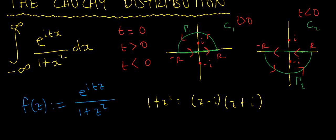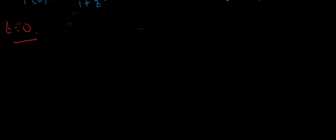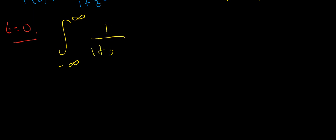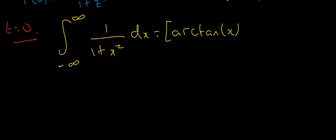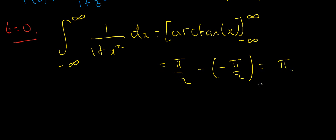When t equals 0, the integral becomes the integral from minus infinity to infinity of 1 divided by 1 plus x squared. That's our familiar arctan integral. Letting x equal tan(u), the derivative of tan is sec squared, and you end up with the integral of 1 du, which is arctan(x). Evaluating from minus infinity to infinity: arctan(x) as x goes to infinity is π/2, minus arctan(x) as x goes to minus infinity, which is −π/2. So the result is π.